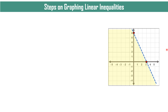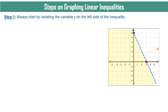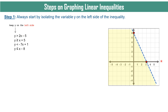What are the steps on graphing linear inequalities? First, always start by isolating the variable Y on the left side of the inequality. For example, we have four inequalities here, and as you can see, Y is isolated on this side. If Y is with another term, then you have to transpose that term to the other side to isolate Y.